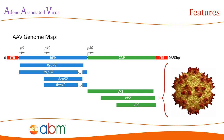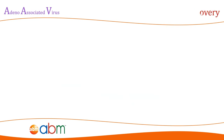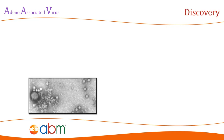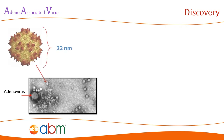The capsid proteins of the AAV assemble into a near-spherical protein shell of 60 subunits. AAV was first discovered in 1965 as a contaminant of adenovirus preparation, which is subsequently how it got its name. At a size of approximately 22 nanometers, the AAV is one of the smallest non-enveloped capsid viruses discovered.